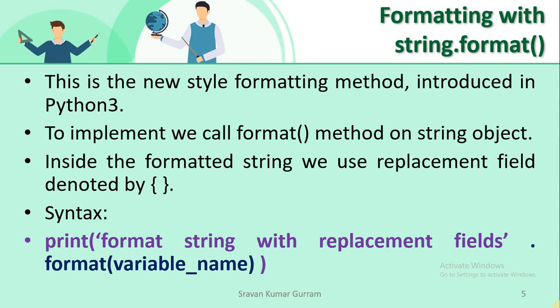See the syntax: in the print statement, within the quotation marks, we write some string. Within that string, we write replacement fields using curly braces. After that, we write dot format, and within the parentheses of this method, we write the variable or variable names.